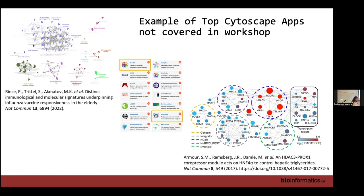Two apps I won't cover but want to highlight: ClueGO, another enrichment analysis tool with very cool visualizations — originally only worked with GO but has been extended to other pathway databases. It's only available for human and mouse, but if you're working with those I definitely recommend it. Another is CytoHubba — a relatively new, highly cited app for finding important parts of your network with cool visualizations, especially good for protein-protein interaction networks.